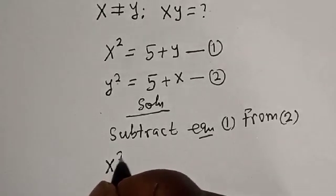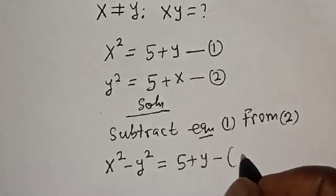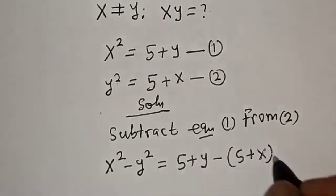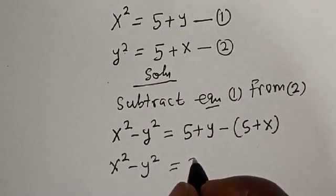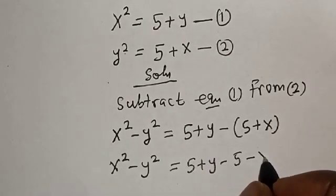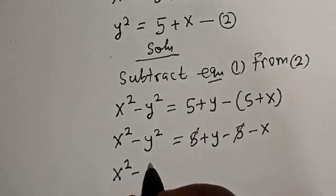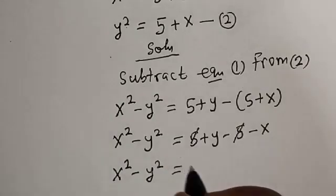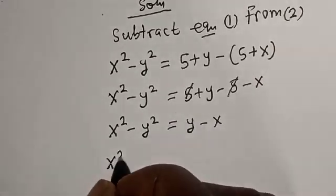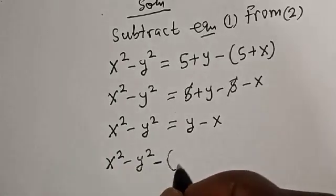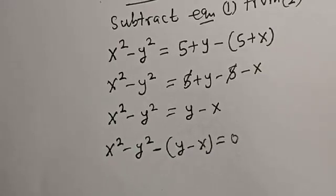Then we have x squared minus y squared is equal to (5 plus y) minus (5 plus x). This simplifies to x squared minus y squared is equal to 5 plus y minus 5 minus x. We cancel the 5s, leaving x squared minus y squared is equal to y minus x. Let's bring this to the other side.